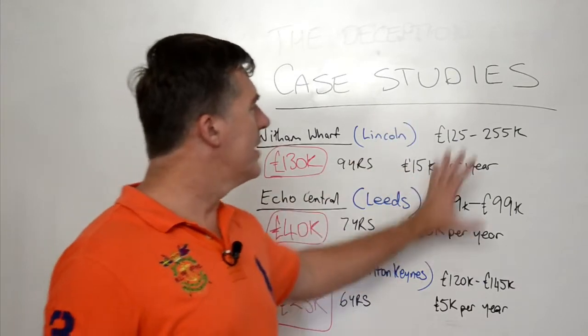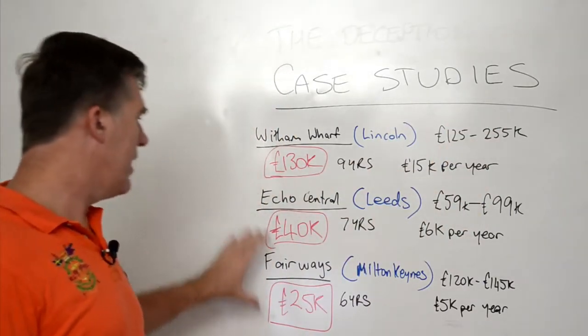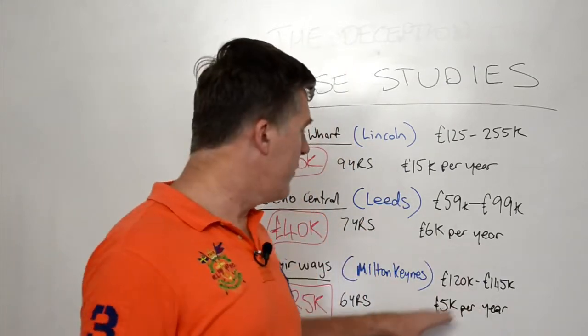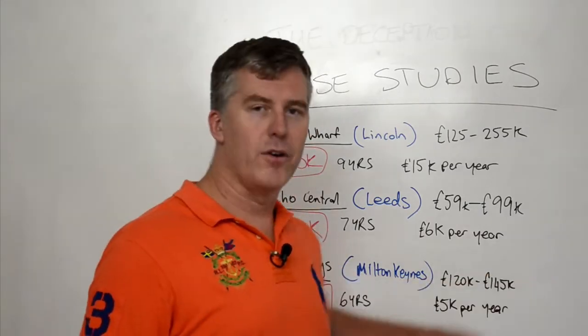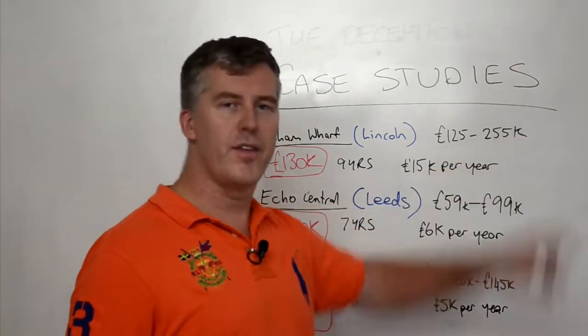So, now you're starting to see these places, and certainly Lincoln's looking up. Leeds is looking up. Milton Keynes is looking up. These places are looking up now. So, you start to see, if we do these in two years' time, you might see that the average goes from five to eight K or to 10 K, and six to 12 K and 15 K to 30 K.